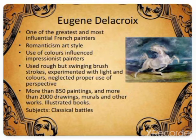He used rough but swinging brushstrokes, experimented with light and colors. On the other hand, he neglected proper use of perspective which was popular then. More than 850 paintings and more than 2000 drawings of Eugène Delacroix are available.